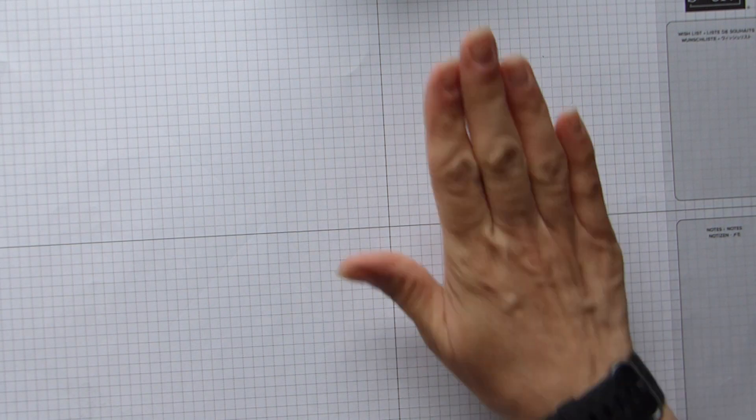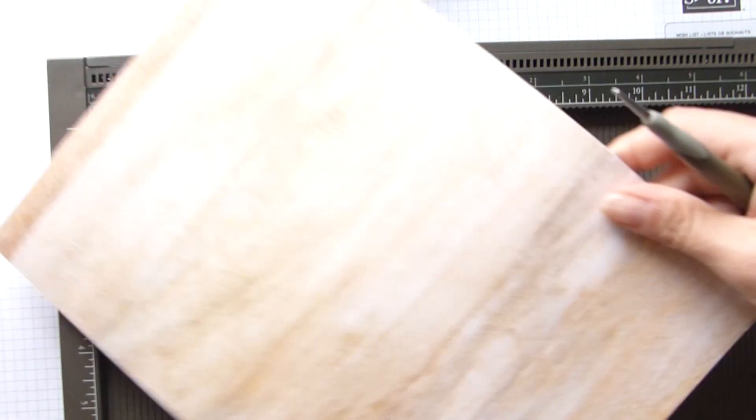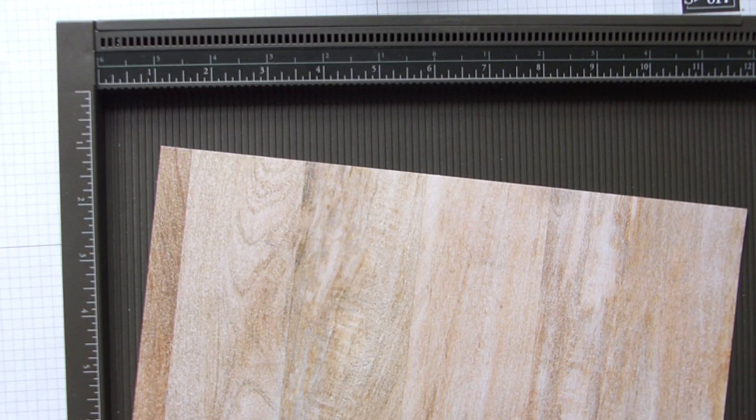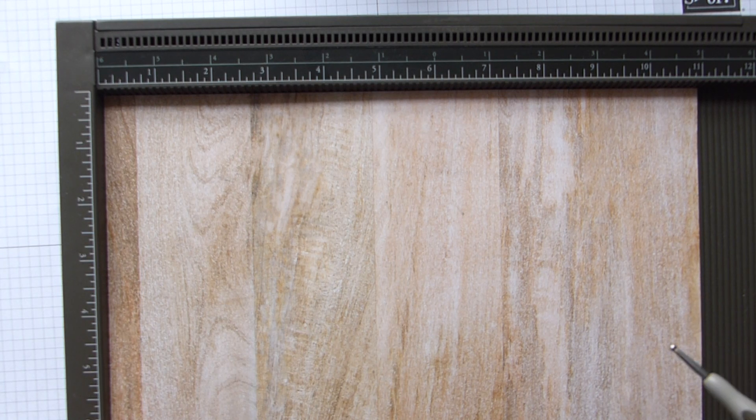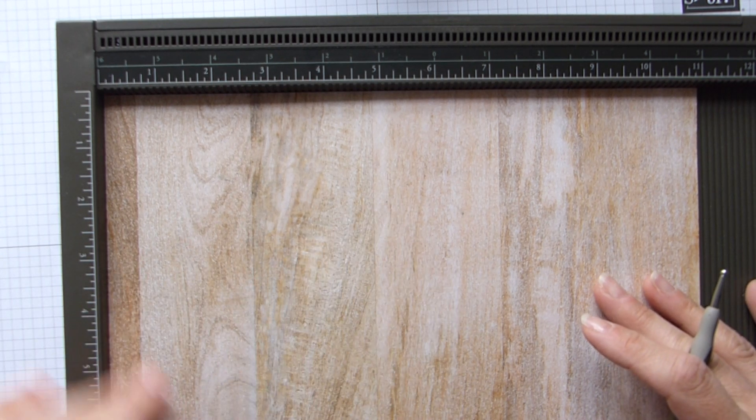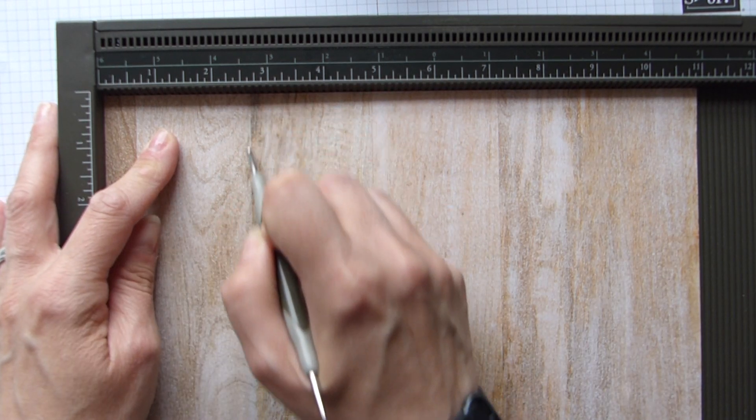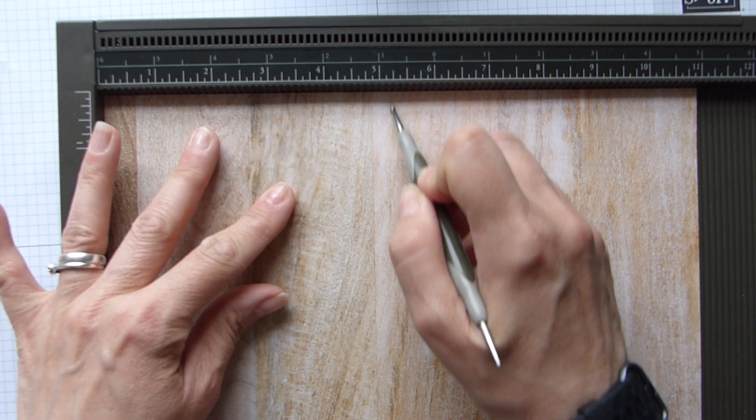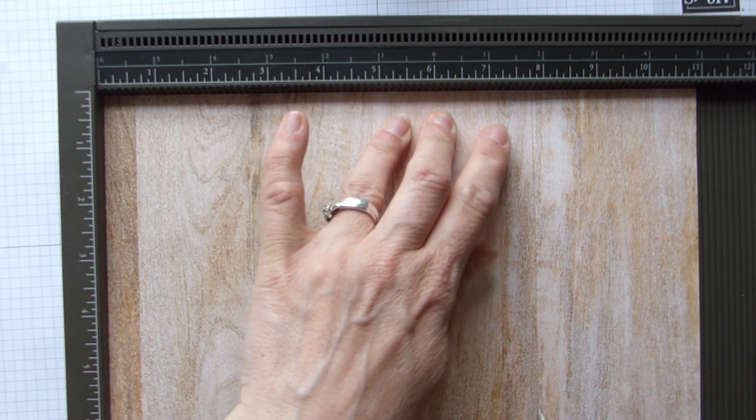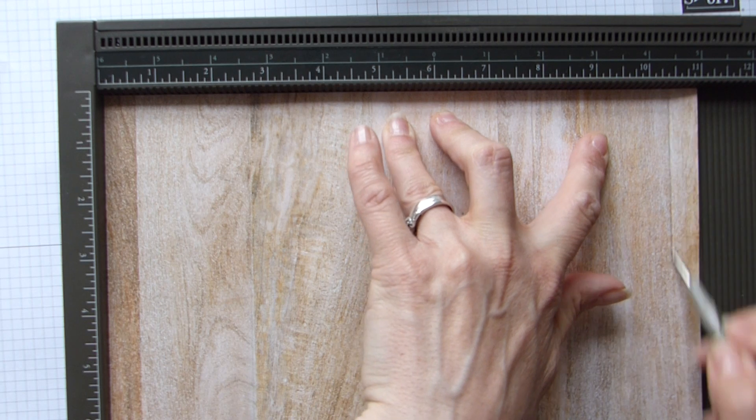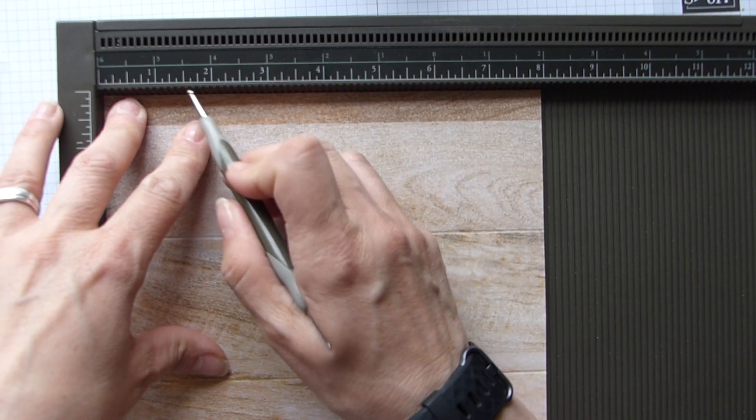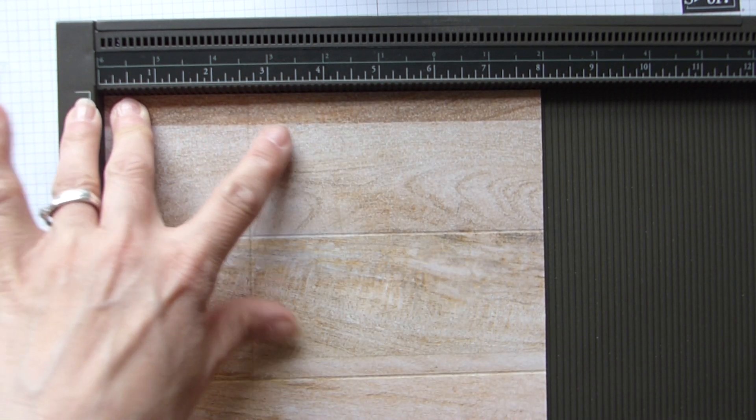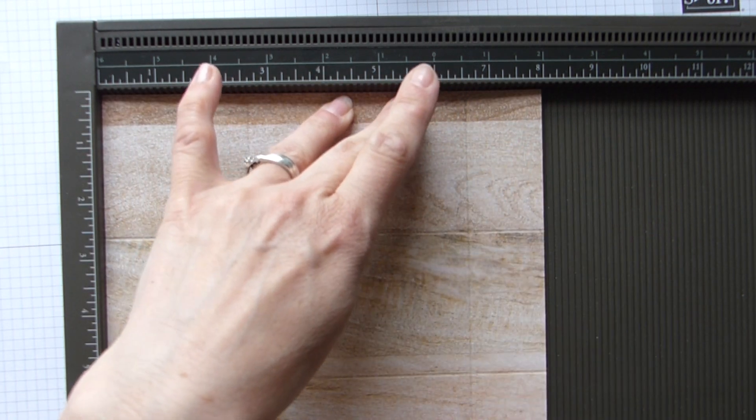So let's make this bag. I'm going to grab my scoring board. So to start off with, you need a sheet of DSP that is 8 by 11, which is 20 by 29.5 centimeters. On the long side, we're going to score at 2 and 5/8, 5 and 1/4, 7 and 7/8, and 10 and 1/2. And then we're going to rotate it clockwise and we're going to score the short side at 2 and 5/8 and 6 and 5/8.